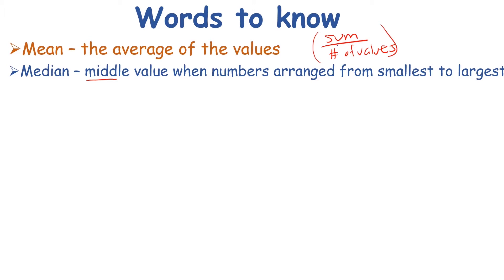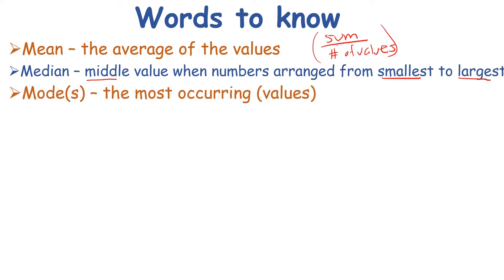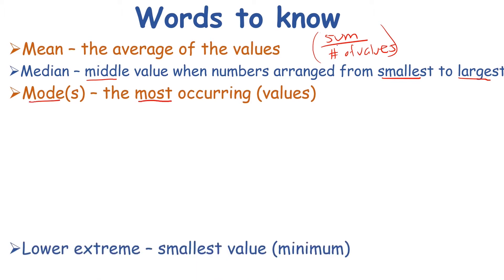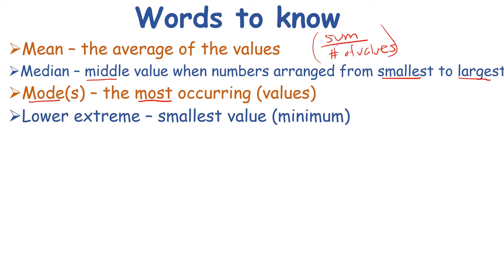To find the median, you arrange the numbers from smallest to largest. If you have two numbers in the middle, you take the average of those two numbers — add them together and divide by two. Next you have the mode, which is the most often occurring number. Remember: mode is most.